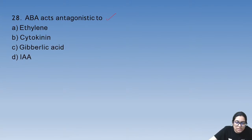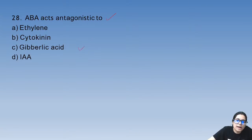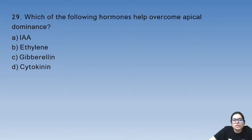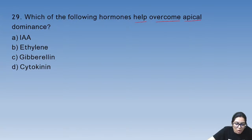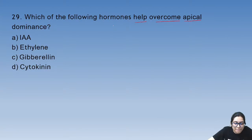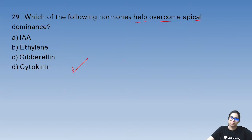ABA acts antagonistic to gibberellic acid. The hormone that helps overcome apical dominance is cytokinin — cytokinin helps overcome apical dominance.